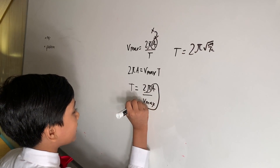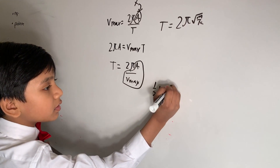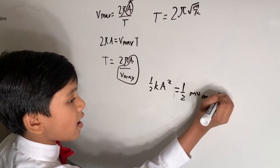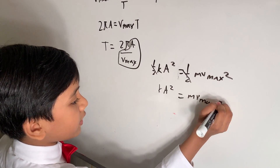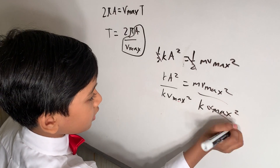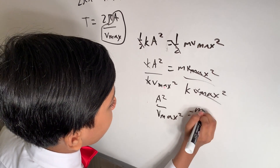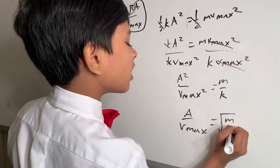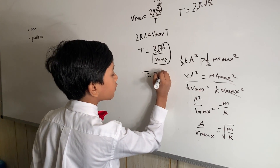This part is very special because if you look back to one of our last lectures, we learned from the conservation of energy that half k a squared is equal to half m V max squared. We can cancel the halves, giving us k a squared equals m V max squared. Dividing both sides by k V max squared — everything cancels — and we get a squared over V max squared equals m over k, which means a over V max equals the square root of m over k. So now T equals 2π times the square root of m over k.